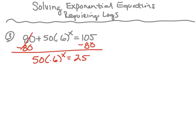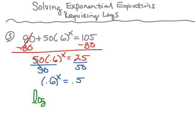Notice I still don't have the base and the exponent isolated, so I still need to take care of this 50. Since they're multiplying by 50, we're going to divide by 50 on both sides. So now we have 0.6 to the x power is equal to 25 divided by 50, which is 0.5. Now I've got the base and the exponent isolated, so I'm going to rewrite this as a log: log base 0.6 of 0.5 equals x.